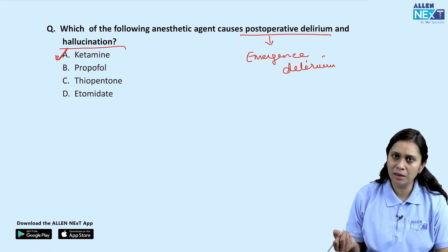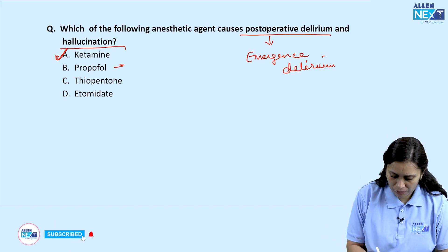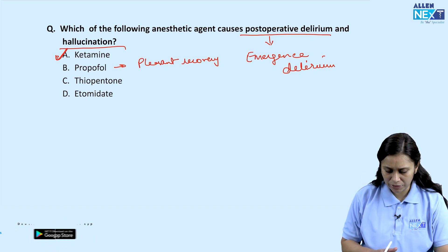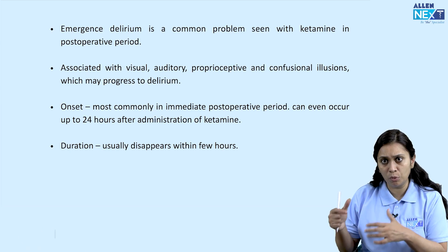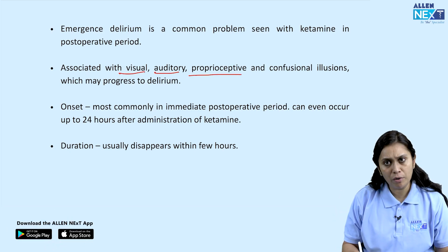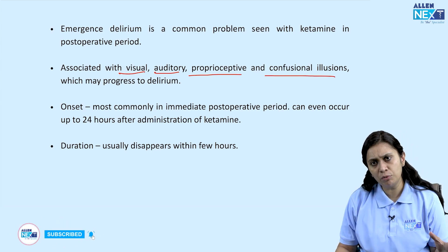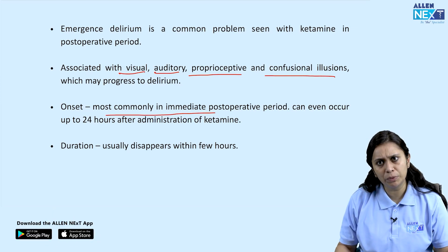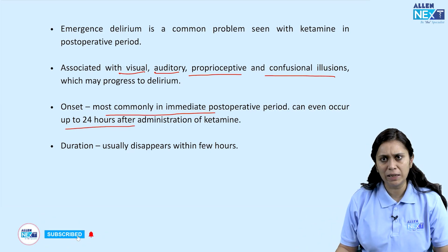Propofol causes a very pleasant post-op recovery. Ketamine, on the other hand, produces delirium and hallucination. Post-operatively, patients are associated with visual, auditory, proprioceptive, and confusional illusions. Because of these illusions, the patient becomes delirious — onset is most commonly immediate in the post-op period after shifting the patient, and can even occur up to 24 hours after ketamine administration.